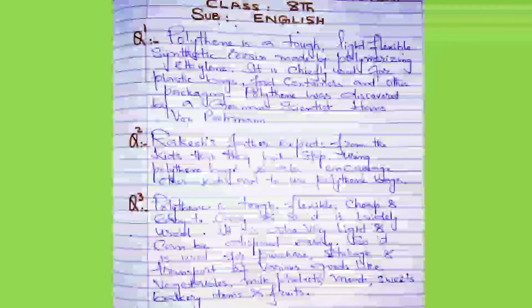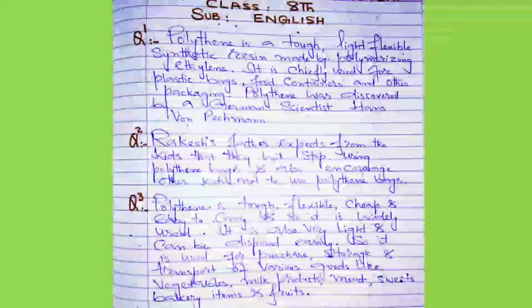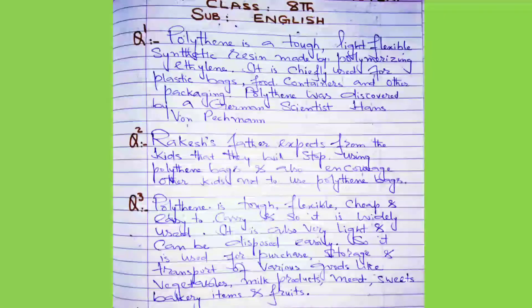Question number one: What is polythene and who discovered it? Polythene is a tough, white, flexible synthetic resin made by polymerizing ethylene. It is cheaply used for plastic bags, food containers, and other packaging. Polythene was discovered by German scientist Hans von Benjamin.